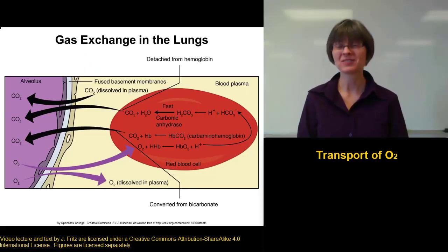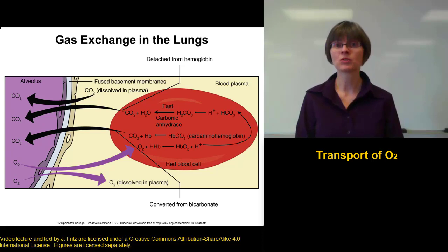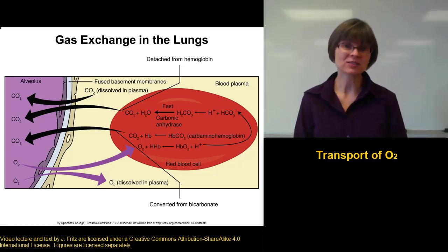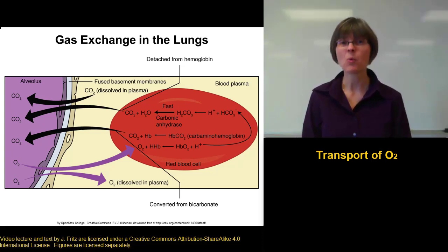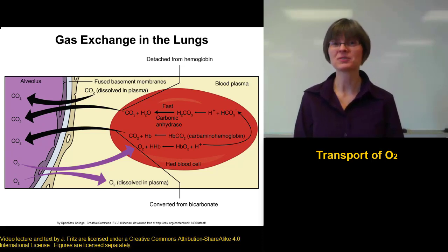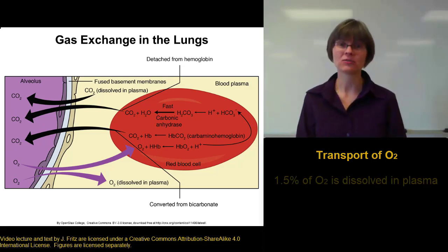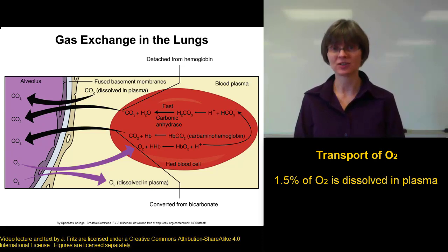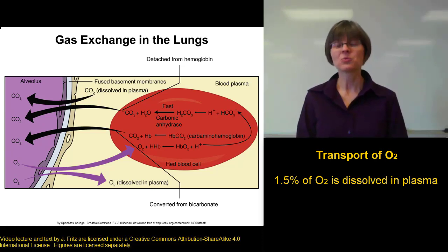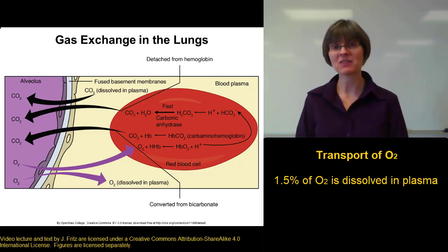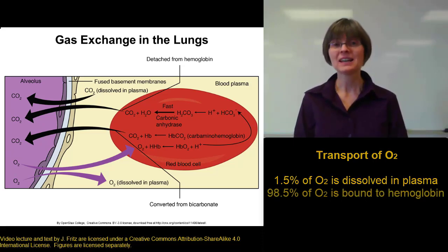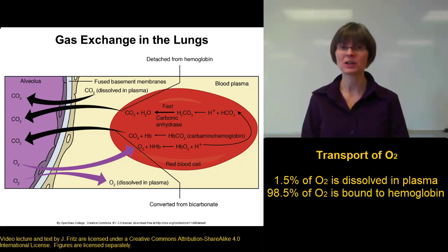Oxygen is a non-polar molecule. That means it doesn't dissolve very well in water. So only about 1.5% of all the oxygen in your blood is dissolved in the plasma, because oxygen doesn't dissolve well in plasma. The rest of the oxygen in your blood — the other 98.5% — is carried bound to hemoglobin.